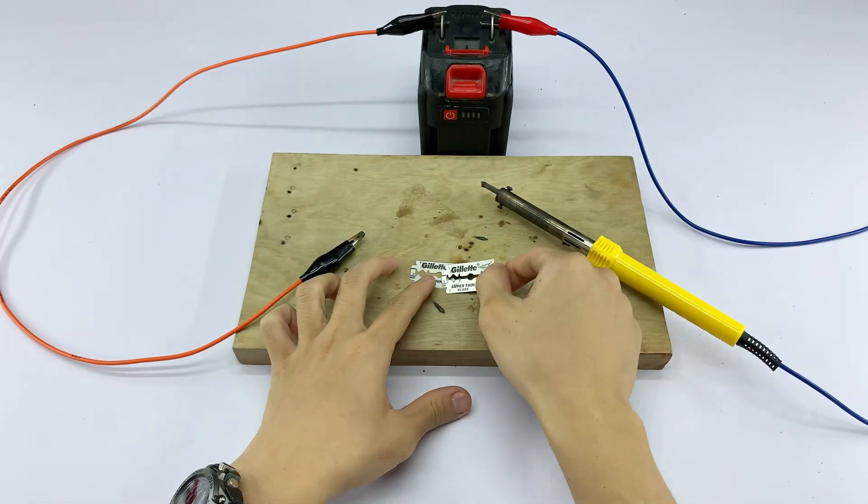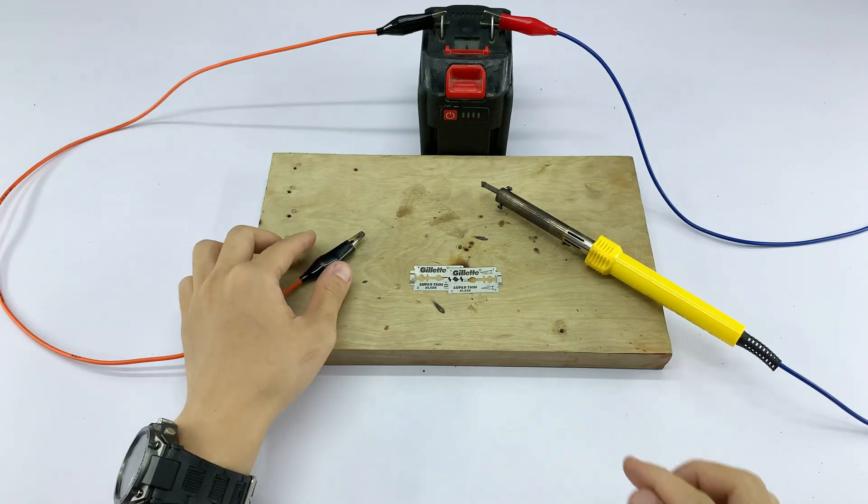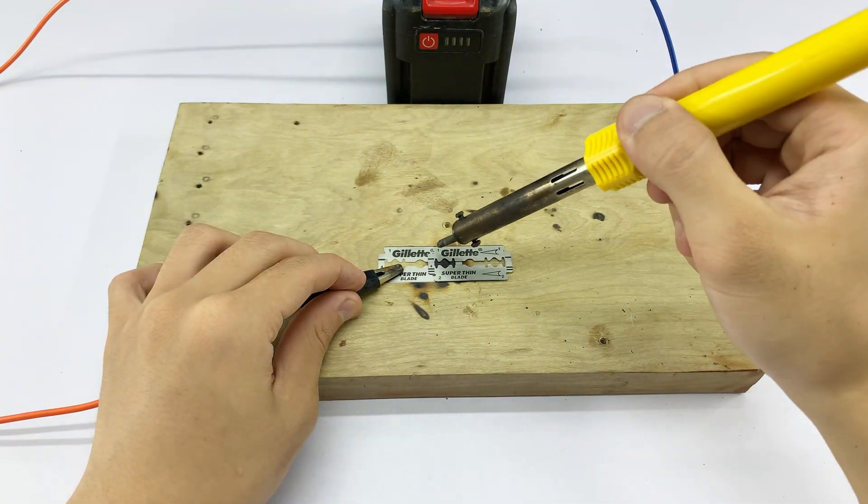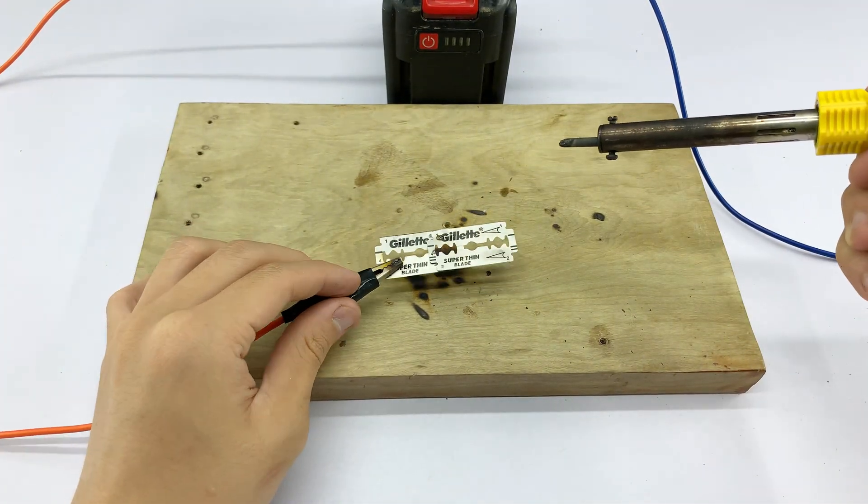I also demonstrated its versatility by using it to melt and bond two razor blades, demonstrating its adaptability. This truly showcases the power we've harnessed from these repurposed items.